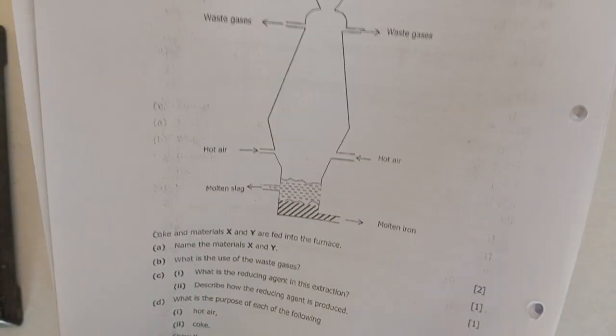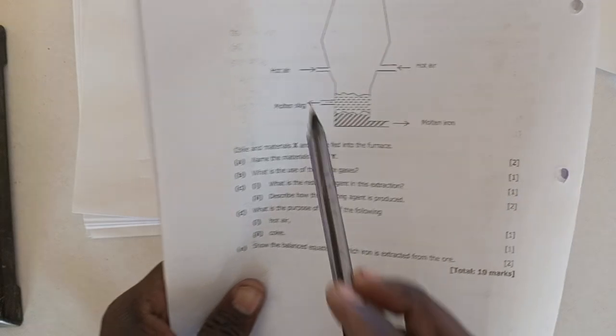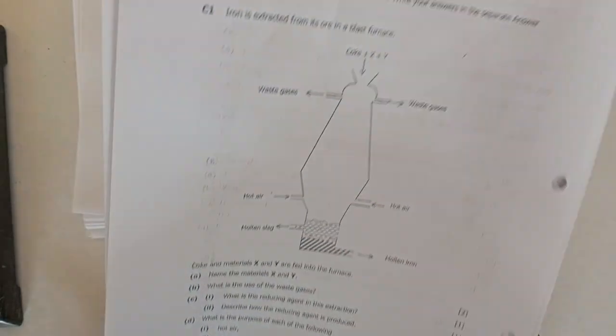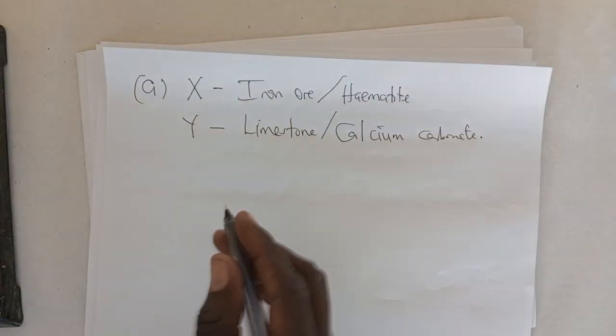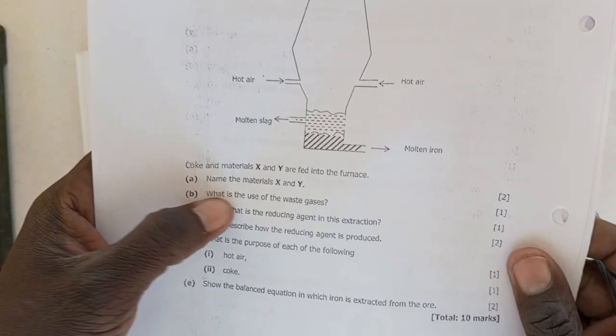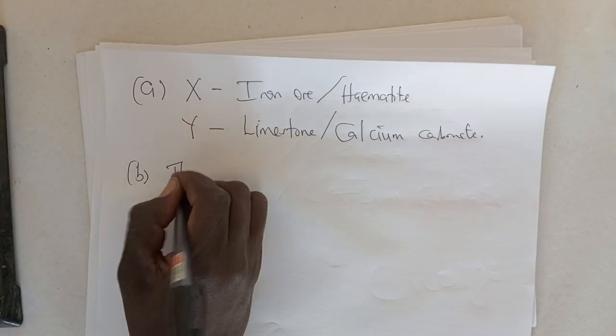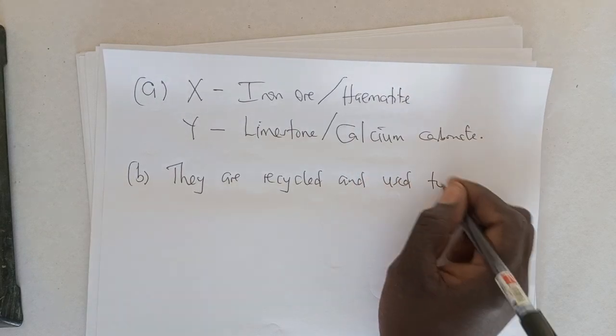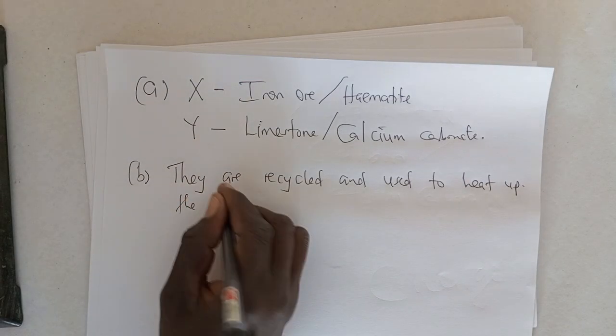Now we go to the questions. The next question asks: what is the use of the waste gases? Remember that we have waste gases coming out of the blast furnace. The waste gases are basically recycled and they heat up the hot air. This hot air is heated up by the waste gases. So the answer to question B is: they are recycled and used to heat up the hot air.